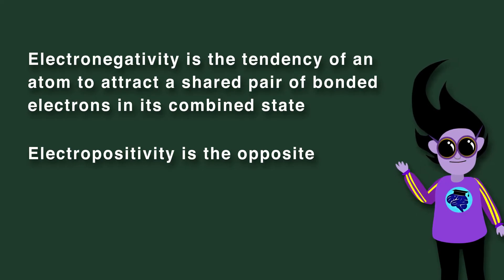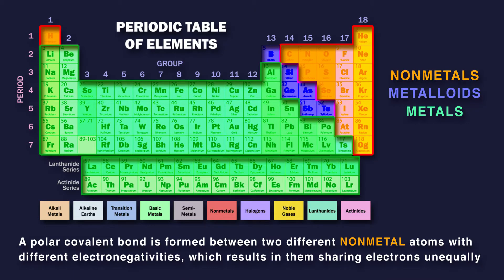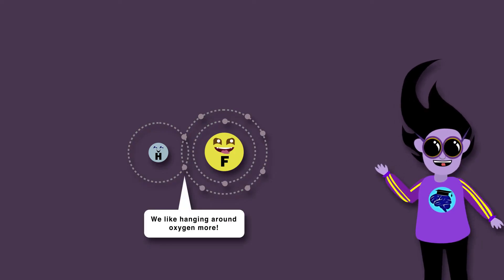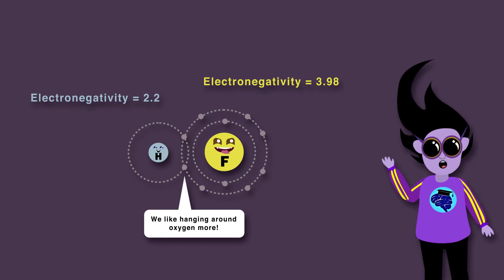Electropositivity is the opposite. A polar covalent bond is formed between two different nonmetal atoms with different electronegativities, which results in them sharing electrons unequally. The bonding electron pair is closer to one of the nuclei, depending on the relative electronegativities of the two atoms.